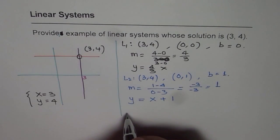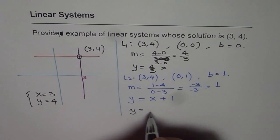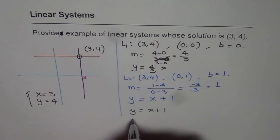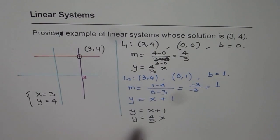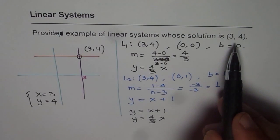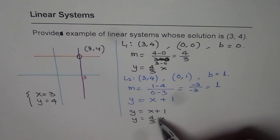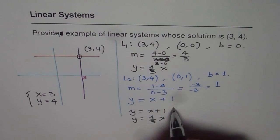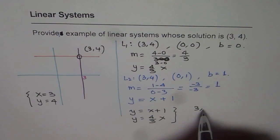So we get our system of equations, whose solution is (3, 4). So our system is y equals to x plus 1, and y equals to 4 over 3x. So these are the two lines, which will have (3, 4) as a common point between the two lines. So this system's solution will be (3, 4).